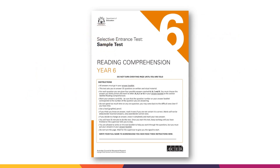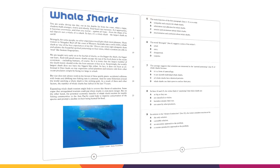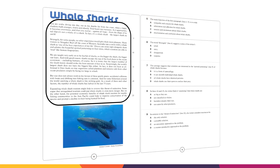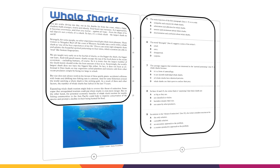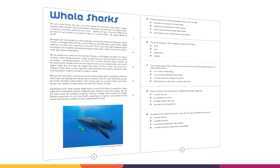Here is an example of a text and some questions. Make sure you read the text and questions before you answer, and then choose the best answer for each question from four options: A, B, C, or D. There are more examples you can look at in the sample test.